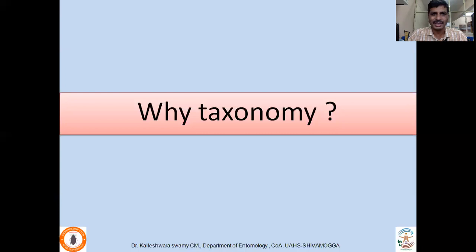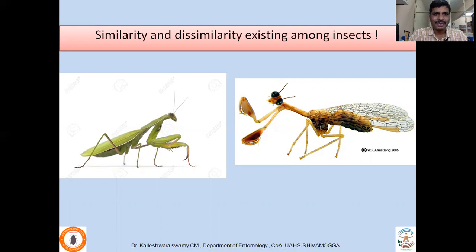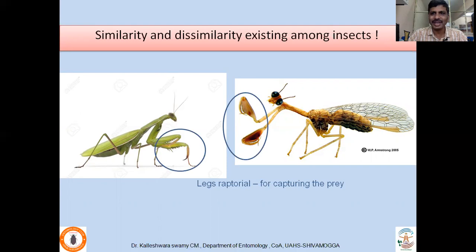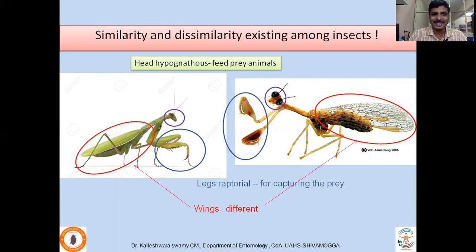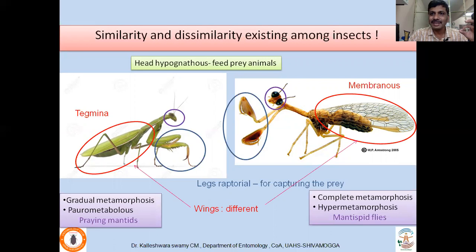Look at these two photographs again. There is a similarity — look for those similarities. You can see that the legs are raptorial, which are meant for capturing prey. Similarly, you can see the hypognathous mouthparts which are used for consuming the captured animals. But look at the third character — the wings look different. Wings are tucked behind in the first photograph, while wings are membranous in the second photograph. The first photograph is a praying mantid, which undergoes gradual metamorphosis — egg, nymph, and adult. This is called a paurometabolous insect.